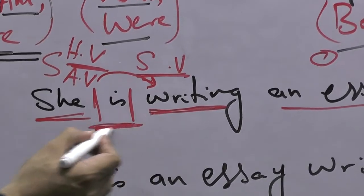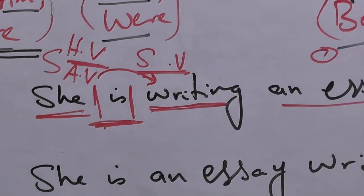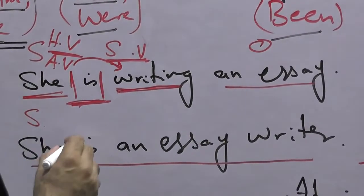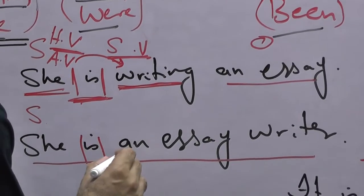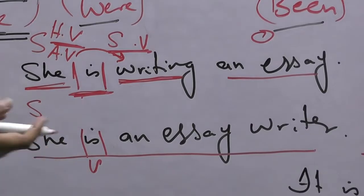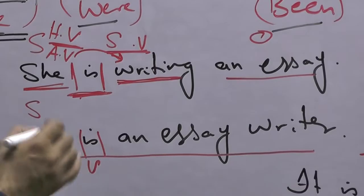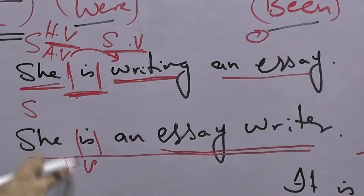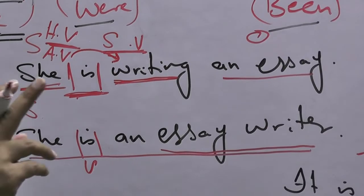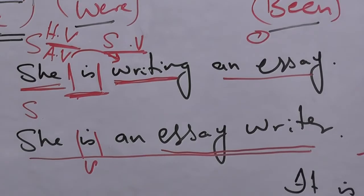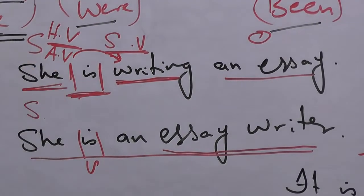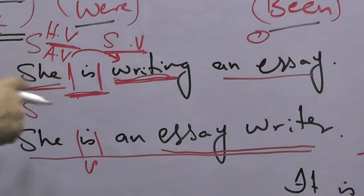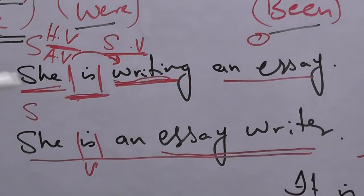Now look at the second sentence: 'She is an essay writer.' Here 'she' is the subject and 'is' is the verb. No strong verb has come after it. So what is 'is' doing here? She is performing no action — she is simply being described. The subject 'she' — what is she? She is an essay writer. This is answering what she is, describing her quality, her state.